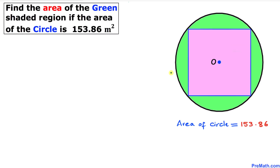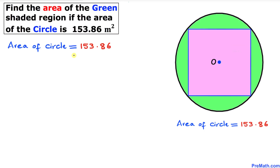Welcome to pre-math. In this video tutorial we have a circle whose area is 153.86 square meters, and a purple square inscribed in this circle. We are going to find the area of the green shaded region. Let's get started with the solution.